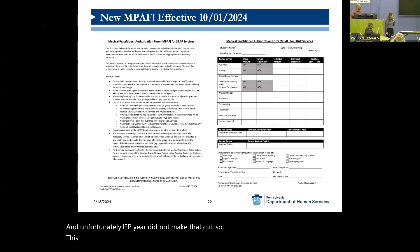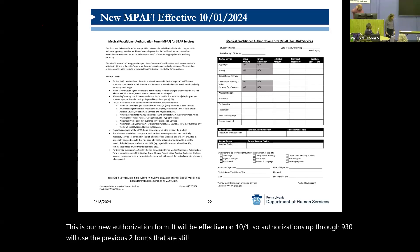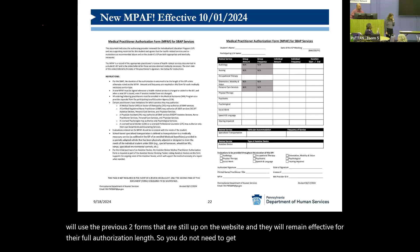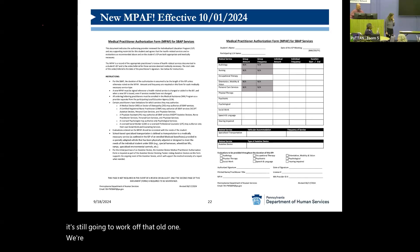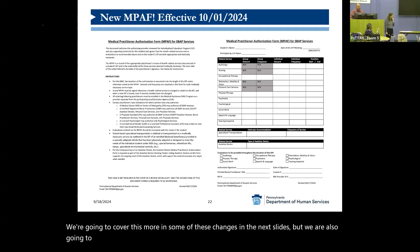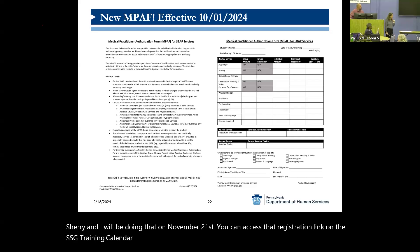This is our new authorization form, effective on October 1st. Authorizations through September 30th will use the previous two forms still on the website, and they will remain effective for their full authorization length — you do not need to get anything re-signed on the new form. We're going to cover more of these changes in the next slides, and we are also going to have a targeted max capture training. Sherry and I will be doing that on November 21st — you can access the registration link on the SSG training calendar.